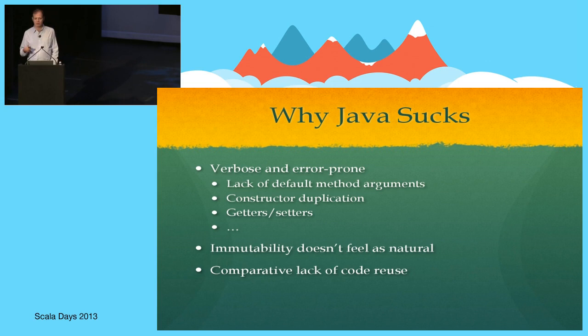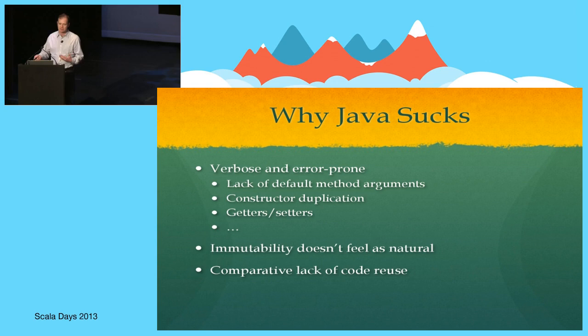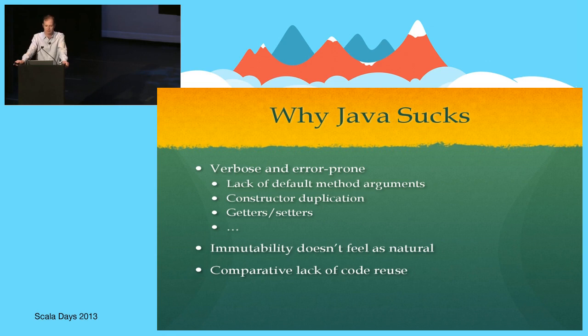Why Java sucks is something I'm also probably preaching to the converted on. Once you start programming in Scala, you realize just how much duplication there is in Java code — chaining constructors, getters and setters, lack of default method arguments, immutability being possible but not natural or encouraged, and limitations in code reuse you can achieve using traits. I was originally going to show examples, but I think it's pretty obvious with this audience.